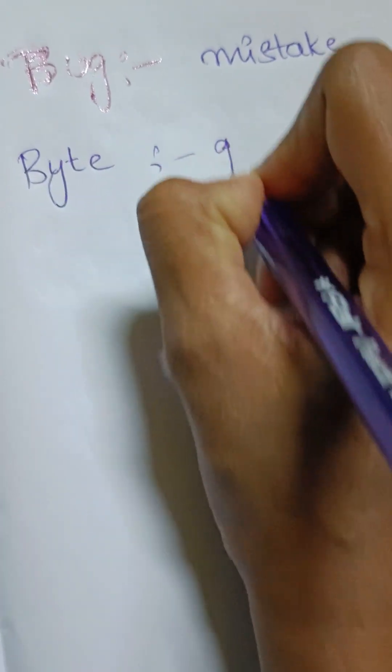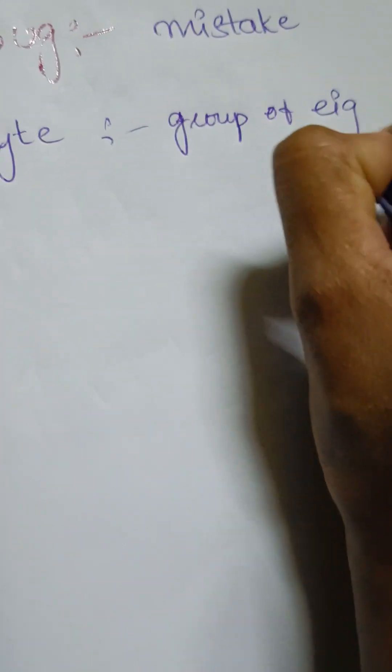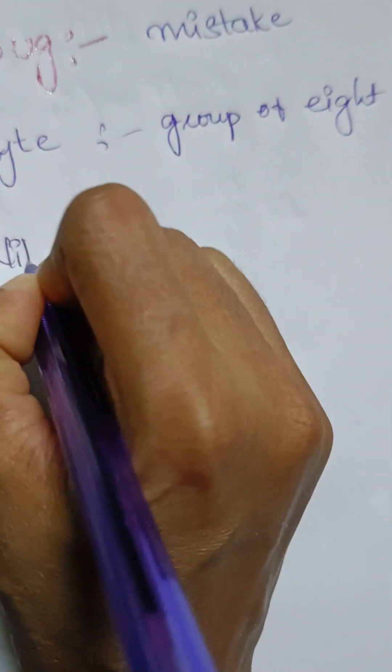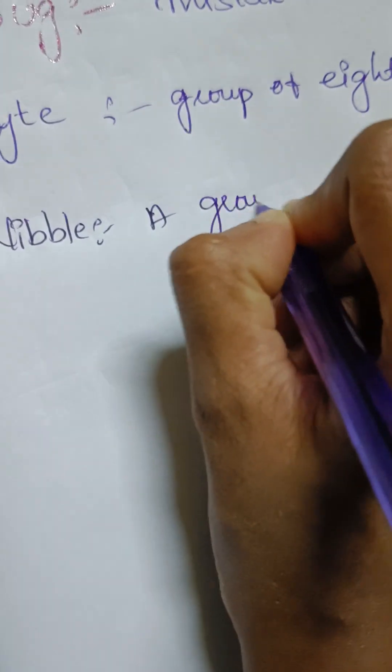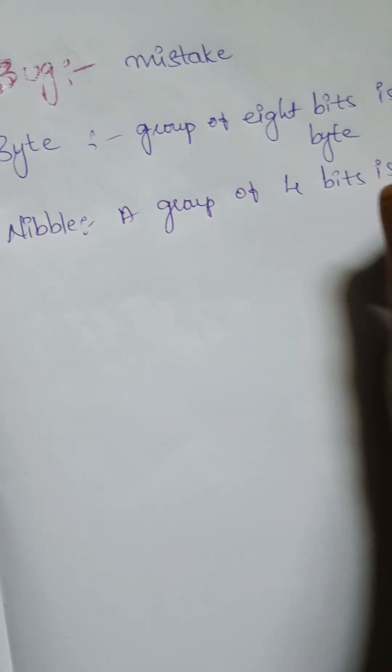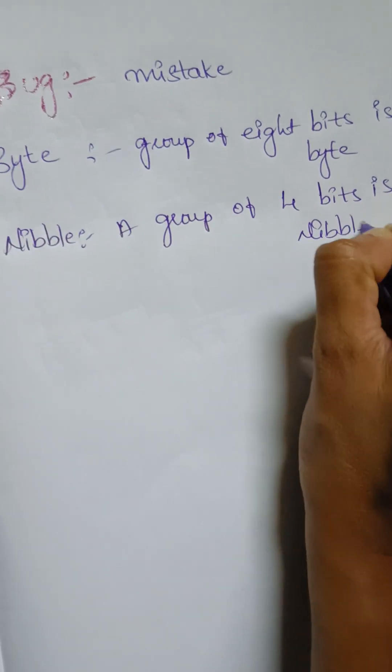Next one is byte. I think most of the people have heard about this word. A group of 8 bits is called a byte. Then what is the meaning of nibble? A group of 4 bits is called a nibble.